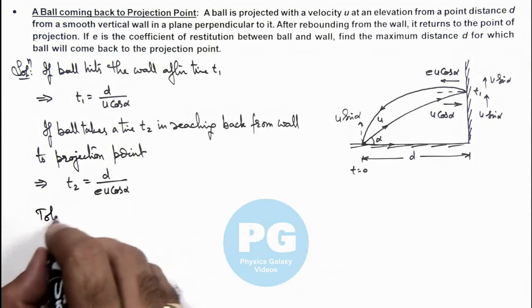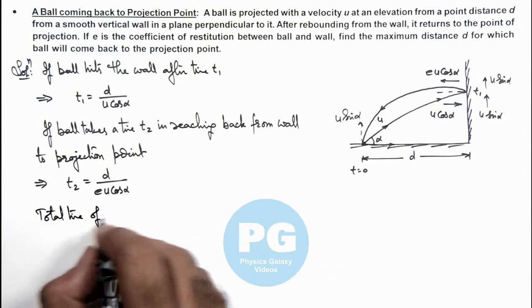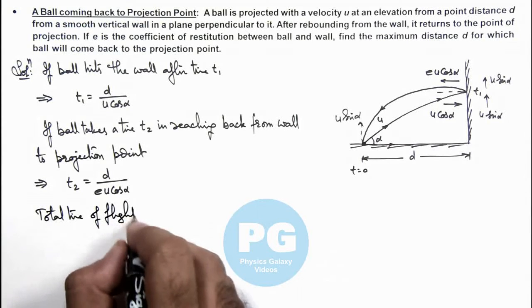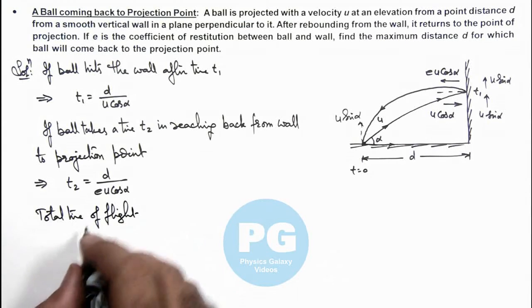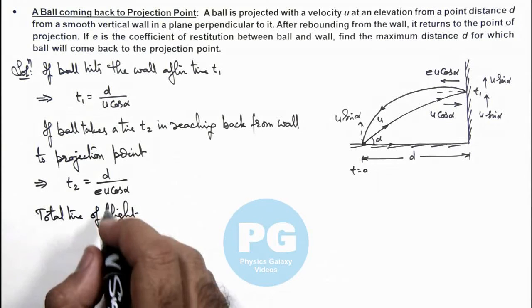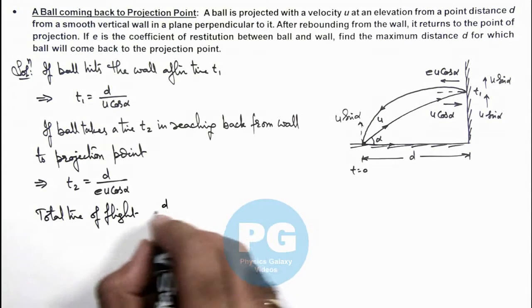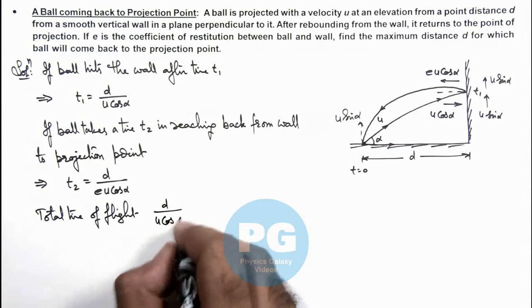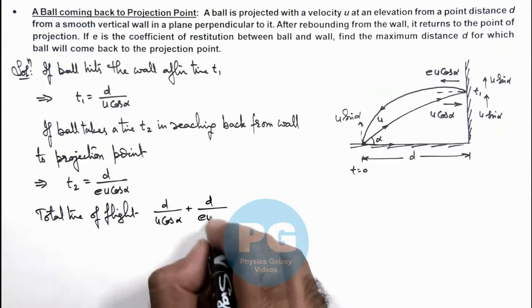So here we can write total time of flight here as t₁ plus t₂, which is d by u cos alpha plus d by e·u·cos alpha.